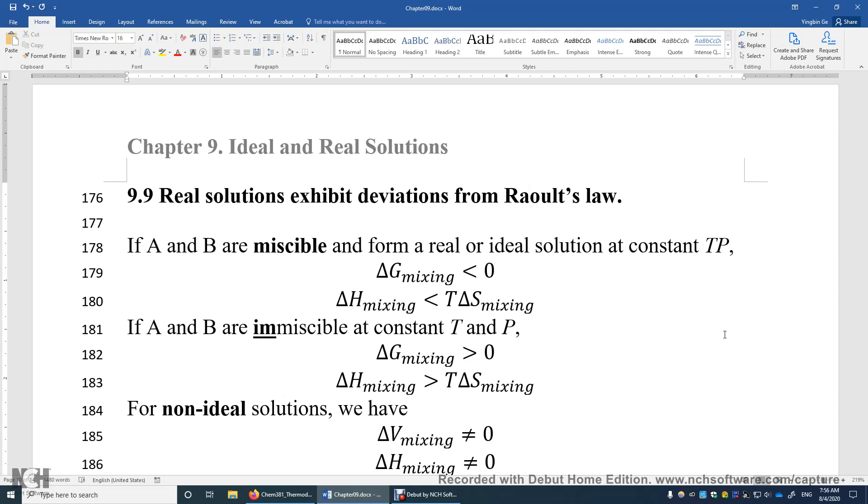Therefore, delta H is less than T delta S, because Gibbs energy is used to determine the natural direction at constant temperature and pressure.